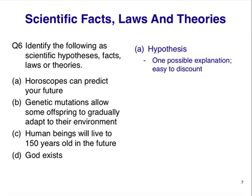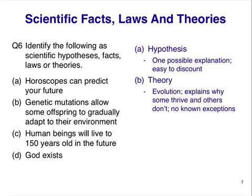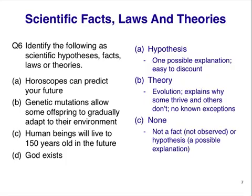The first statement is a hypothesis — one possible explanation of your future. Actually, this one is easy to discount. Horoscopes are pseudoscience, something that looks like science but does not follow the procedures or methods of science. The next statement explains how organisms can adapt to their environment, some thriving and some failing. This is called natural selection, and the theory is called evolution. Human beings will live to 150 years old in the future — it's not a fact because it's not based on an observation. It's not a hypothesis because there's no plausible explanation. It's not a law because there are no facts. And it's not a theory for the same reason it's not a hypothesis. So this statement is none of the things we're testing for — it's more like a personal belief.